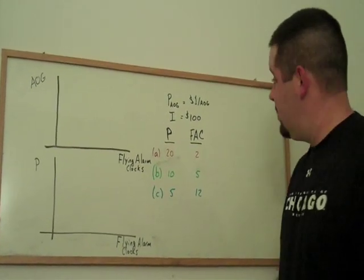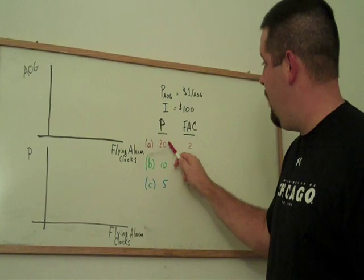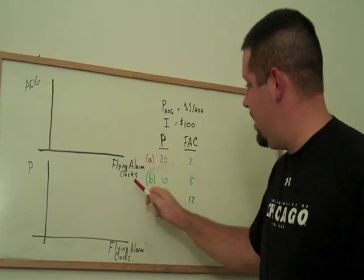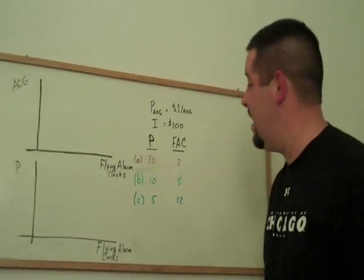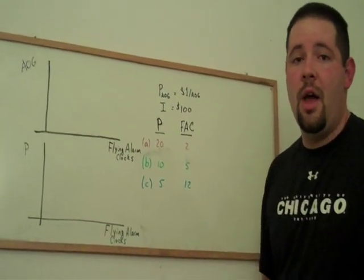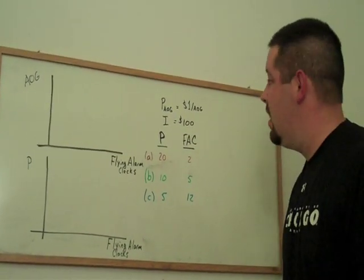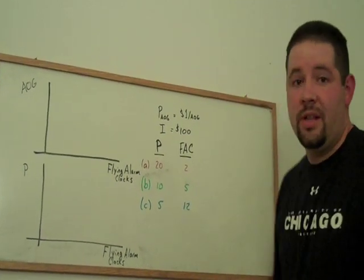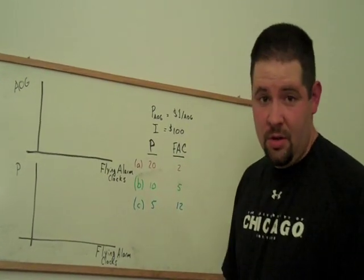Let's go ahead and graph the budget constraint if the price for the good that we're interested in, flying alarm clocks in this case, is $20. So, again, as with the previous videos, what we do with budget constraints is we ask how much of all other goods could we buy?